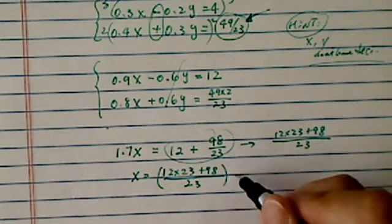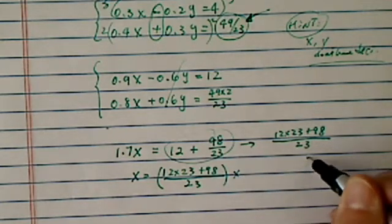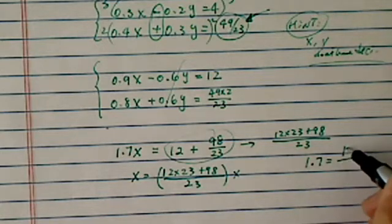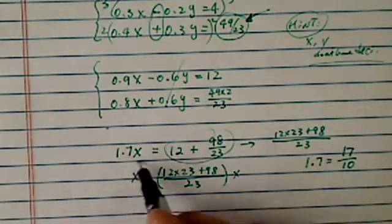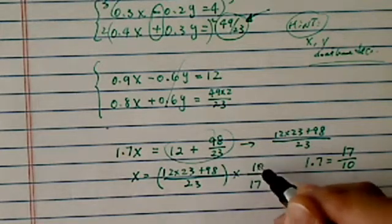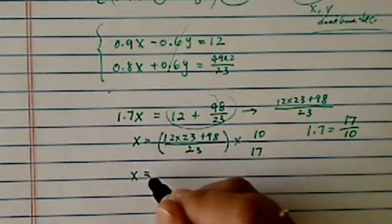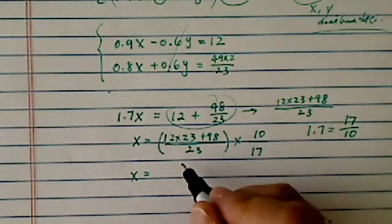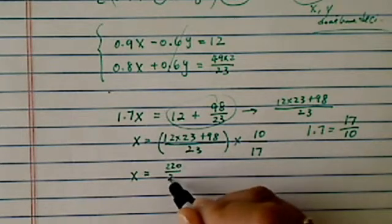12 times 23 plus 98 divided by 23. I'm going to divide it by 1.7. 1.7 is really 17 over 10. Since it's divided by 17 over 10, I'm going to multiply the reciprocal, which is 10 over 17. And if you simplify a little bit, you'll have x is equal to 220 over 23.